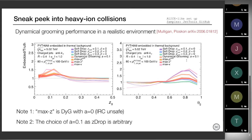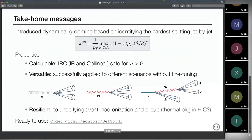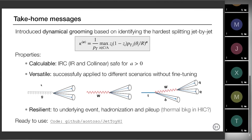Besides that nomenclature issue, we see that the dynamical grooming method — taking maximum z as the best result — is compatible with the soft drop performance without any need for fine tuning. Let me conclude. I have introduced dynamical grooming based on identifying the hardest splitting on a jet-by-jet basis. To summarize the properties: it is calculable and most importantly infrared and collinear safe for a larger than zero. It is very versatile — we were surprised to see it can be applied to different scenarios without fine-tuning anything. You are able to reduce the sensitivity of QCD jets to hadronization, distinguish W from gluon jets, and accommodate multi-prong topologies.